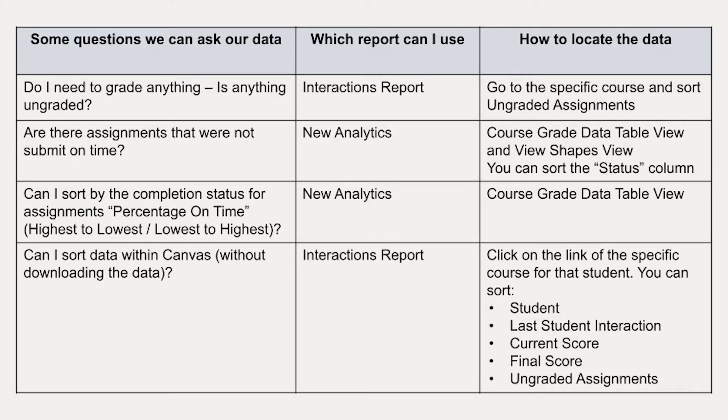So this is my kind of cheat sheet that I've been working on lately — what questions did I have and how did I answer them? This table helps me go back and say, where did I find that data? One question I have is, do I need to grade anything? Is there anything left ungraded? And the way I found this is through the interactions report. Here are directions of how you can go to a specific area and click on certain things to find that data — it tells you, whoa, you forgot to grade these things, they're still sitting there as ungraded. Are there assignments that were not submitted on time by my students?